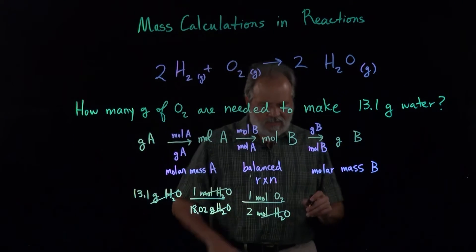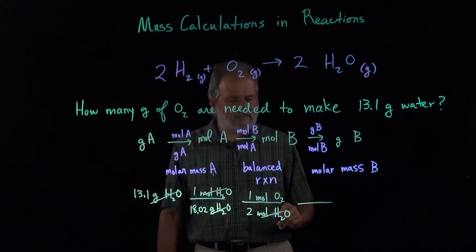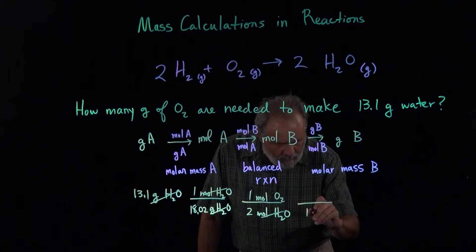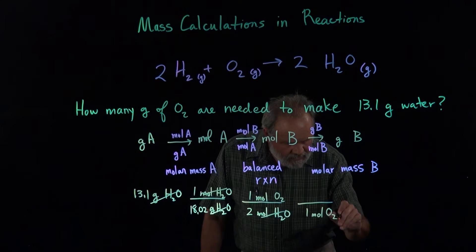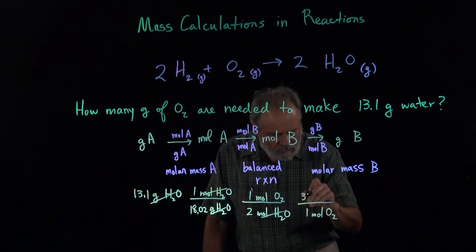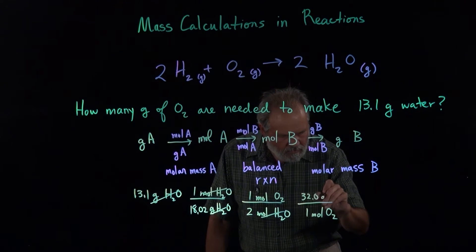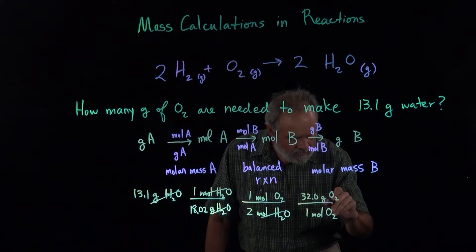One mole, two moles. And now finally, the molar mass of molecular oxygen. One mole of diatomic oxygen is 32.0 grams of oxygen.